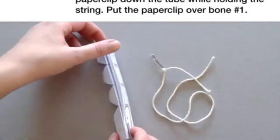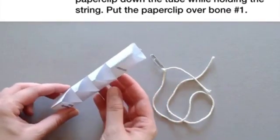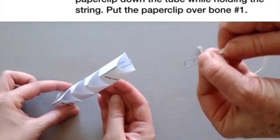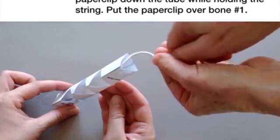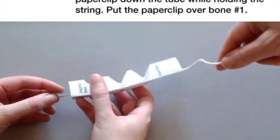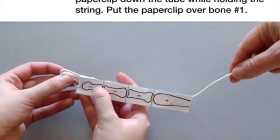Watch this whole step before you do anything. Turn the tube like this. And partner, slide the paper clip down the tube while holding the string. Then, put the paper clip over bone number 1 like this.